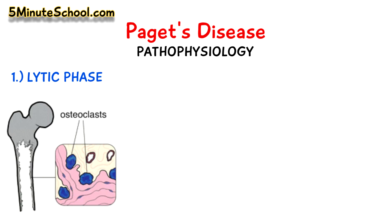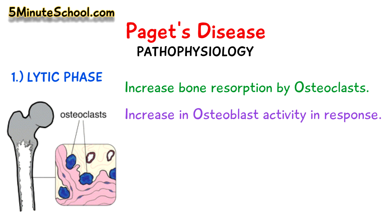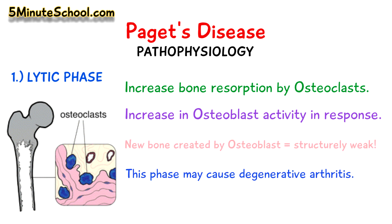Let's talk about the pathophysiology of Paget's disease and how it occurs. We have the lytic phase, where there is an increase in bone resorption by osteoclasts and an increase in osteoblast activity in response. The new bone produced by the osteoblasts is poorly organised — it's structurally weak and highly vascular, because the osteoblast activity is excessive trying to keep up with the osteoclast activity. This phase may also cause degenerative arthritis.